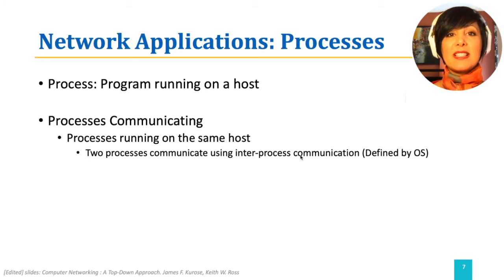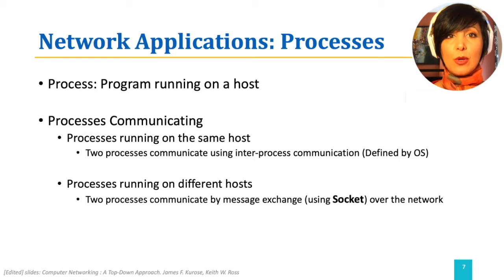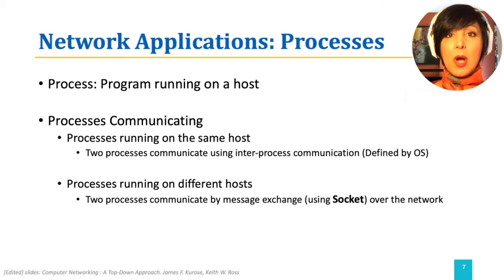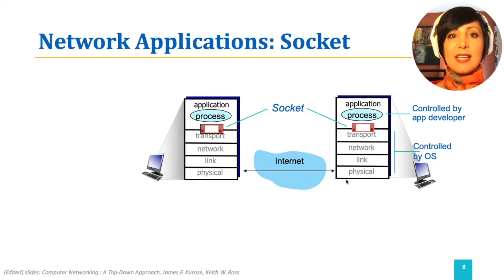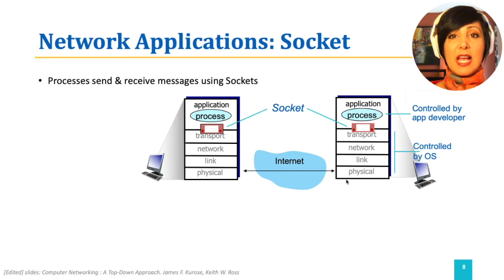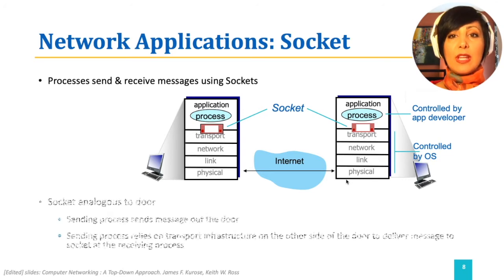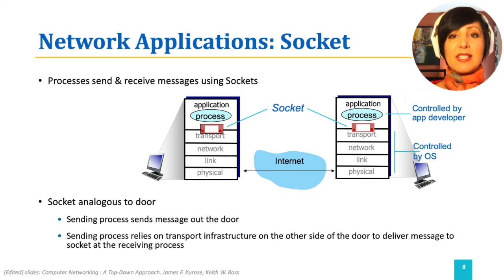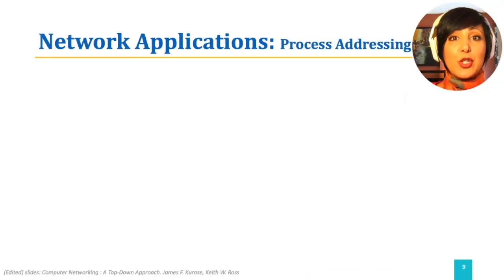Two processes running on different hosts should communicate with each other through a network. This is made possible using a software interface called a socket. A socket to a process is like a door to a house. A sending process sends messages out of its socket through the network to the receiving process, and a receiving process receives messages at its socket coming from the network.